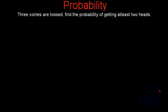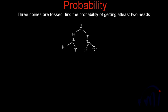Let's first list down all the possibilities when we toss 3 coins. When I toss the first coin I can get either heads or tails. When I toss the second coin, again I can get a head or a tail. So these will be the 4 possible outcomes if I toss 2 coins.